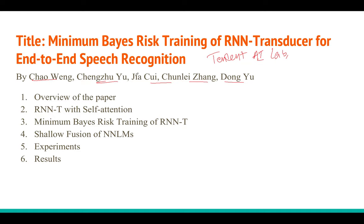Basically we are going to explain the new way of doing end-to-end speech recognition using something called Minimum Bayesian Risk loss, also known as MBR loss. This is one of the older techniques developed by Daniel Povey — I think before 2014. It comes under something called discriminative training of speech recognition algorithms. There are various other discriminative training methods like MMI and MPE, and MBR is also one of them.